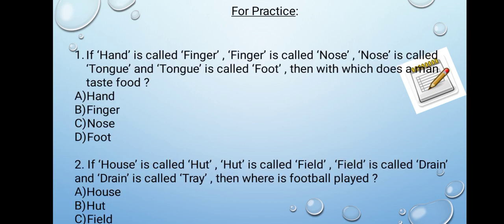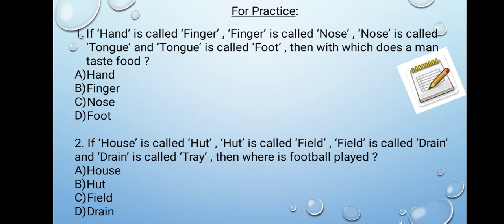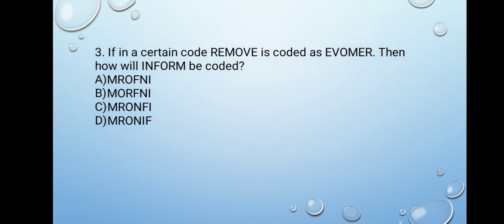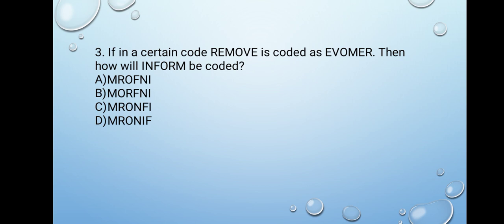So I am giving you some practice questions. You have to do these questions as homework with the help of your parents. Question number one: if hand is called finger, finger is called nose, nose is called tongue and tongue is called foot, then with which does a man taste food? Second: if house is called hut, hut is called field, field is called drain and drain is called tray, then where is football played? Question number three: if in a certain code REMOVE is coded as E-V-O-M-E-R, then how will INFORM be coded?